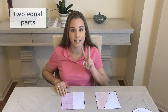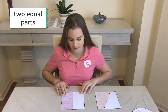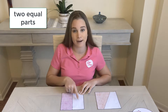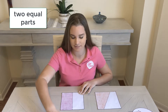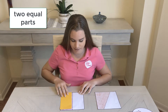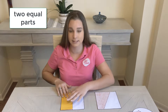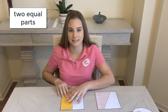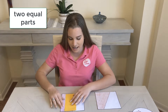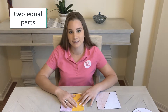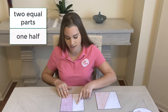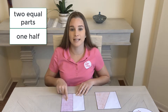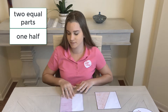This one was divided into equal parts. Both parts are the same size. This yellow piece of paper covers this part exactly and it covers this part exactly so they are the same size. So we can call this one half.